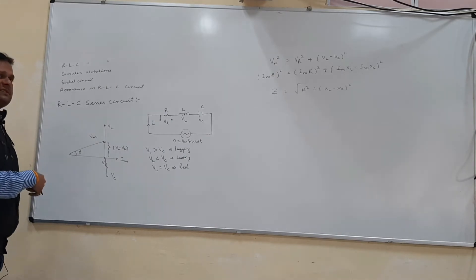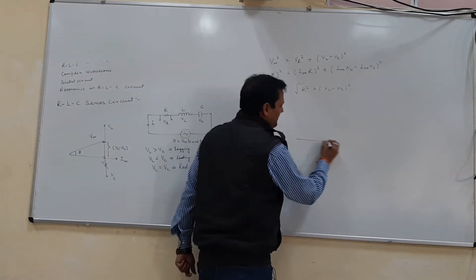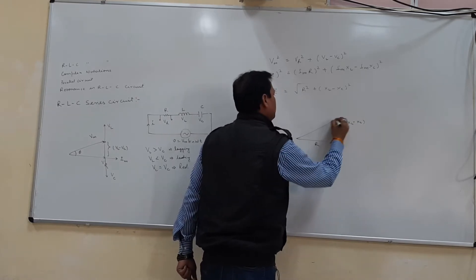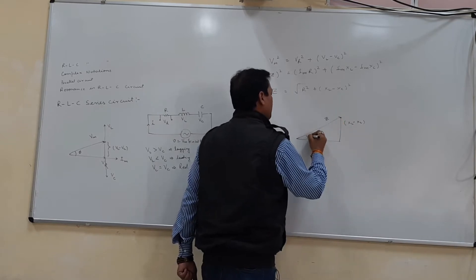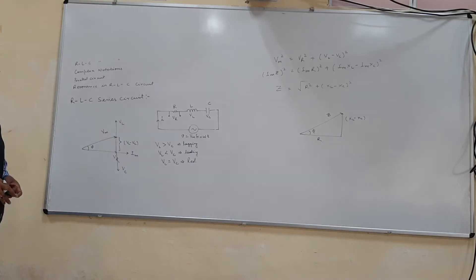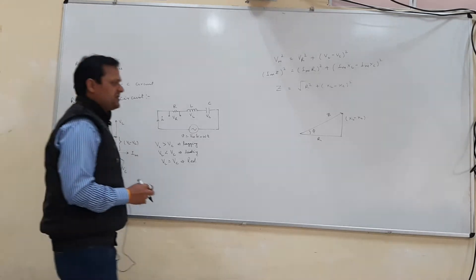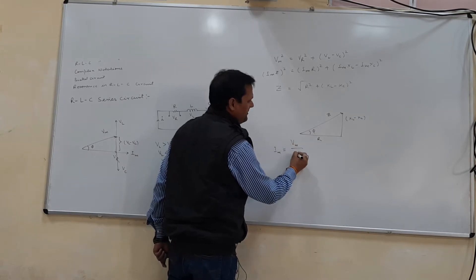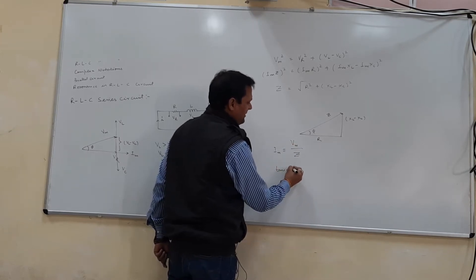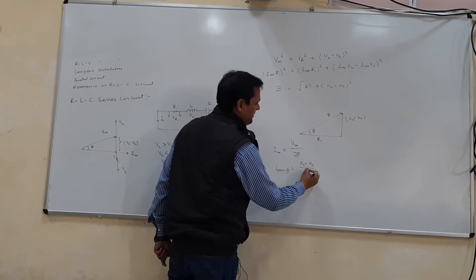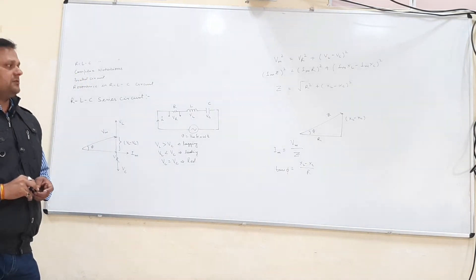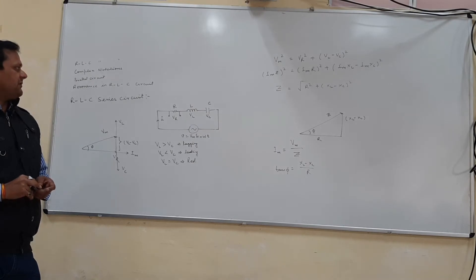The impedance triangle has R as the base, (XL minus Xc) as the vertical side, and Z as the hypotenuse with angle phi. Once Z is known, we find Im equals Vm divided by Z. And tan phi equals (XL minus Xc) over R, from the right-angle impedance triangle.